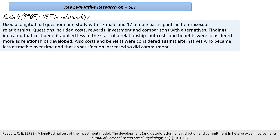Rusbult used a longitudinal questionnaire study with 17 male and 17 female participants — importantly, none of whom were dating each other; each was in a separate heterosexual relationship. Over time they repeatedly answered questionnaires on costs, rewards, investments, and comparisons with alternatives. The findings were that cost-benefit analysis applied less at the start of a relationship, but became more important as the relationship developed. Alternatives also became less attractive over time as commitment developed.